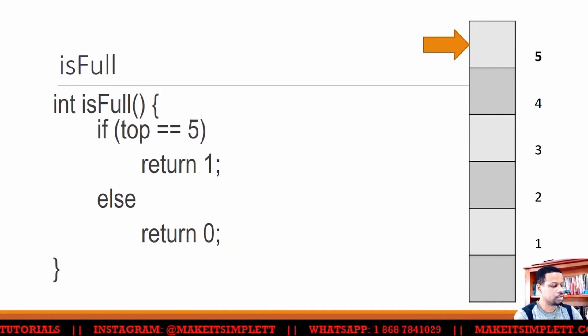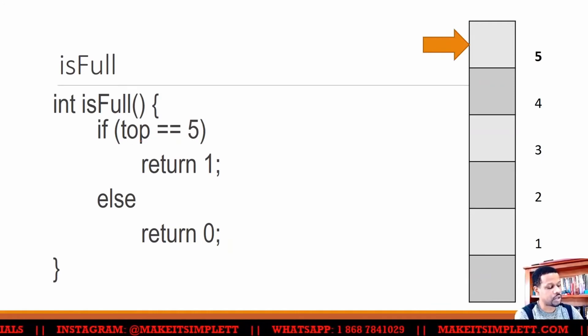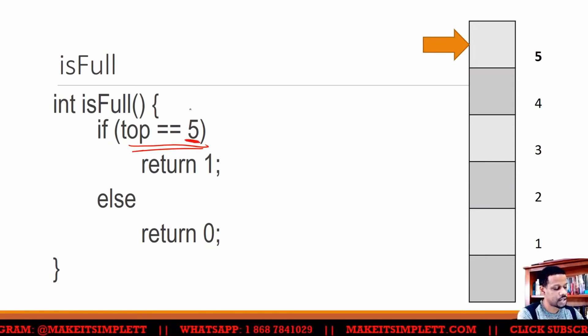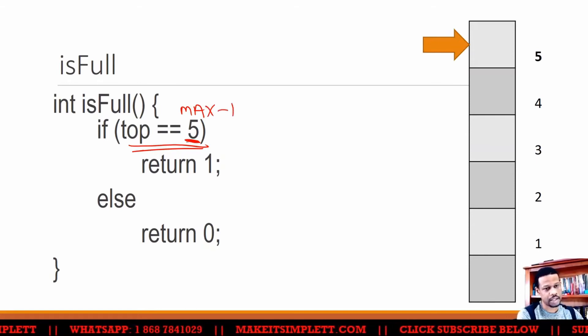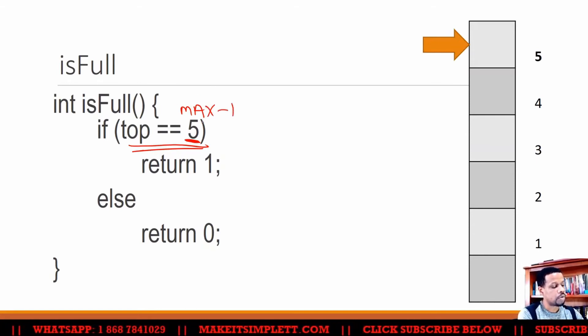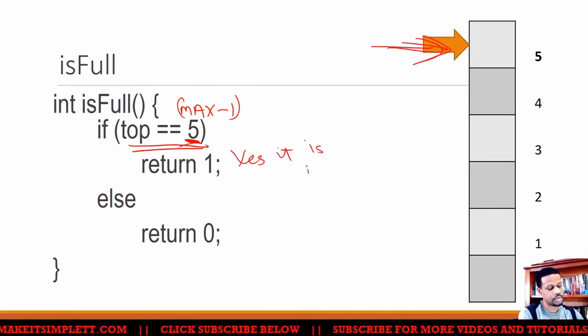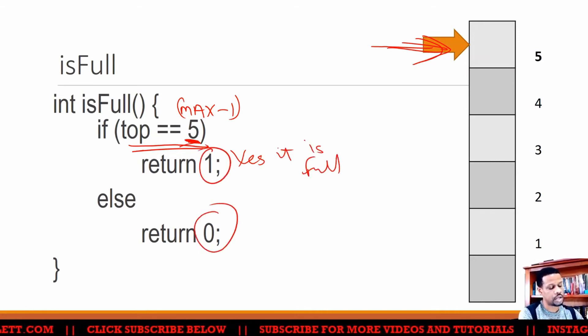Is full now is going to check to see if top is equal to the highest number. So sometimes you'll see five, depending on if you know the actual size. Sometimes you'll see max or max minus one, some kind of thing like that. But once you know that the top is pointing to the highest possible value that you have, then you know it's full. So if it is full, you return a one, or else you return a zero.